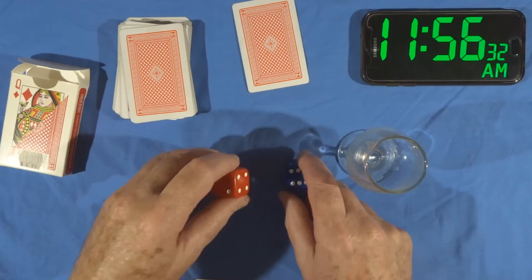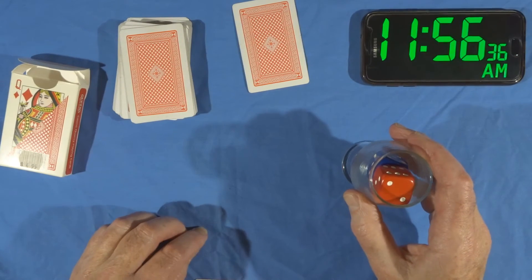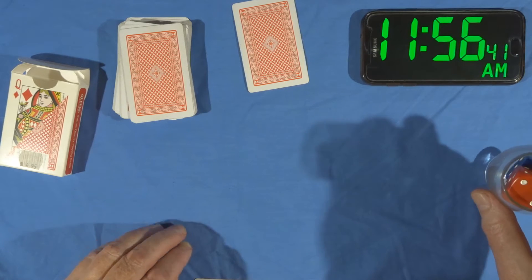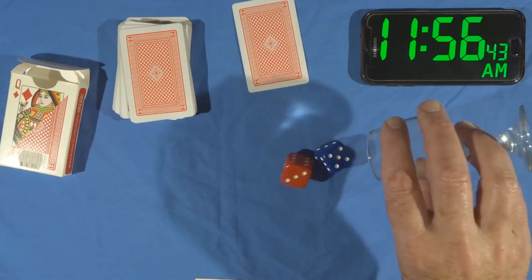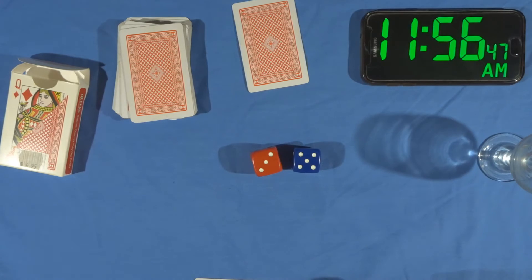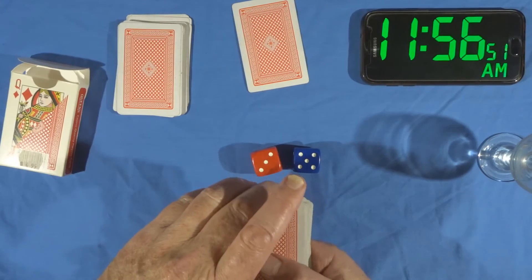Now I'm going to throw the dice again but I want to select a card further down in the pack. So whatever comes up now I'll double the total. Five and three, that's eight, two eights are sixteen. So I'll count down sixteen cards.